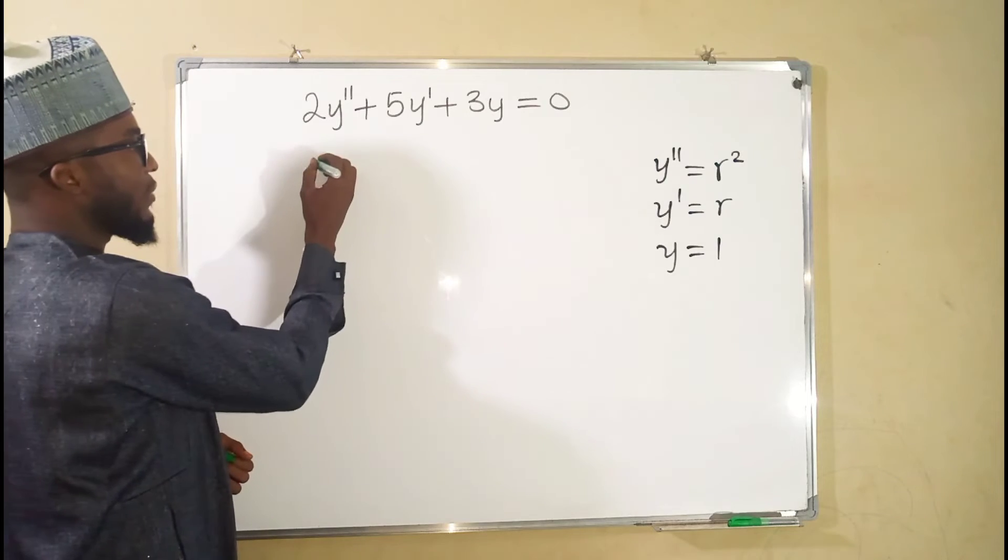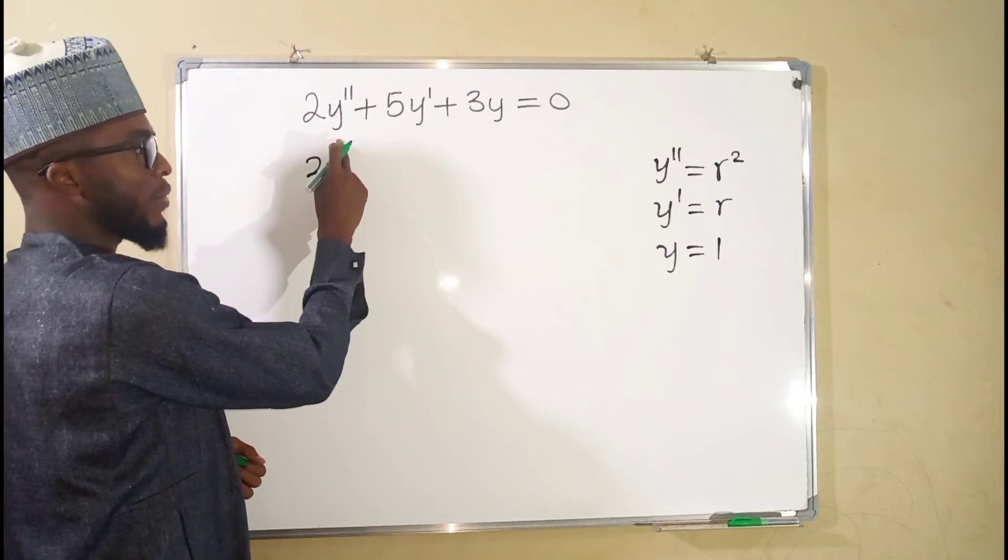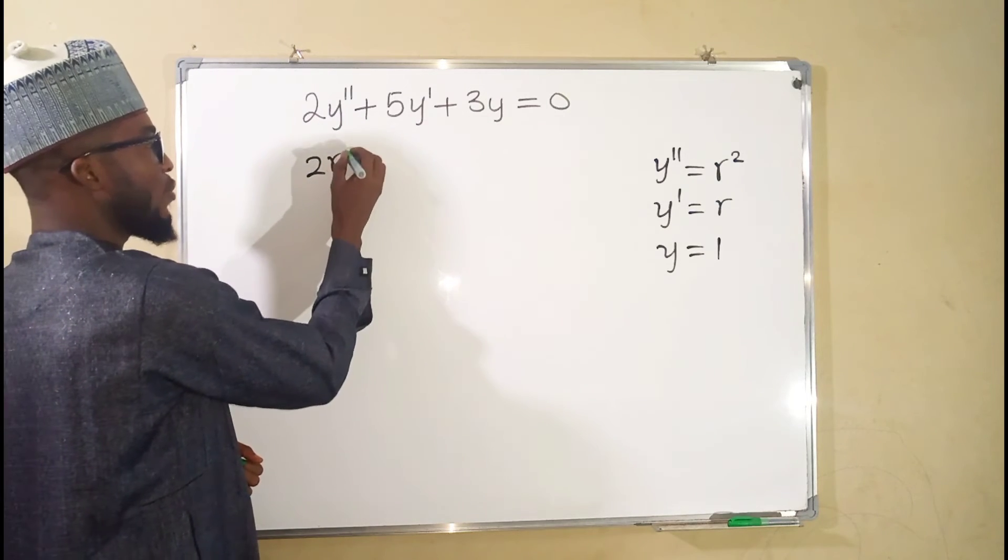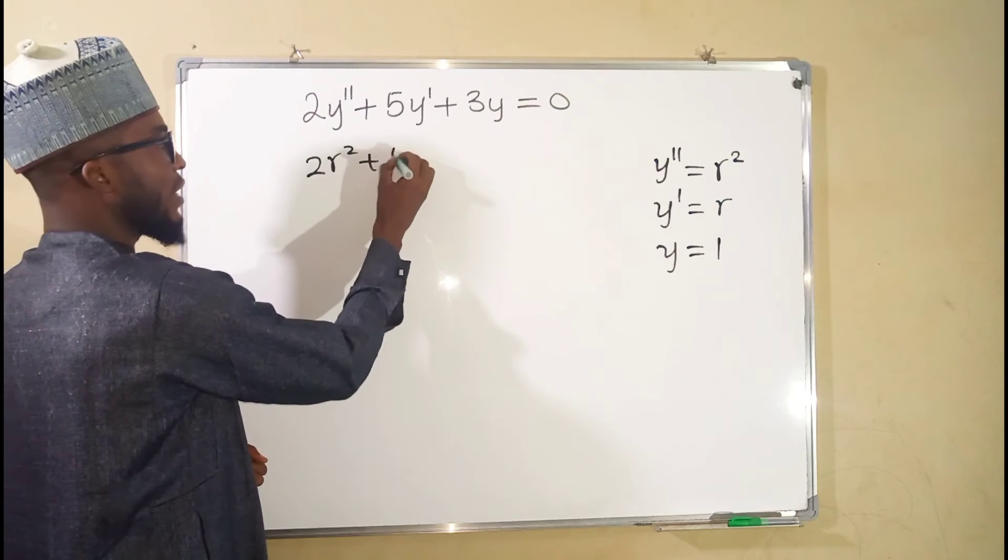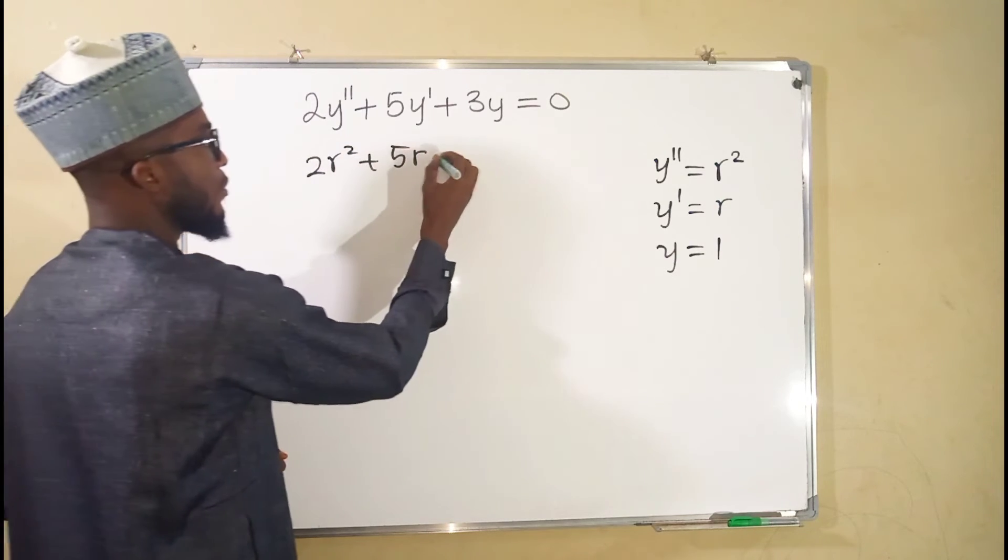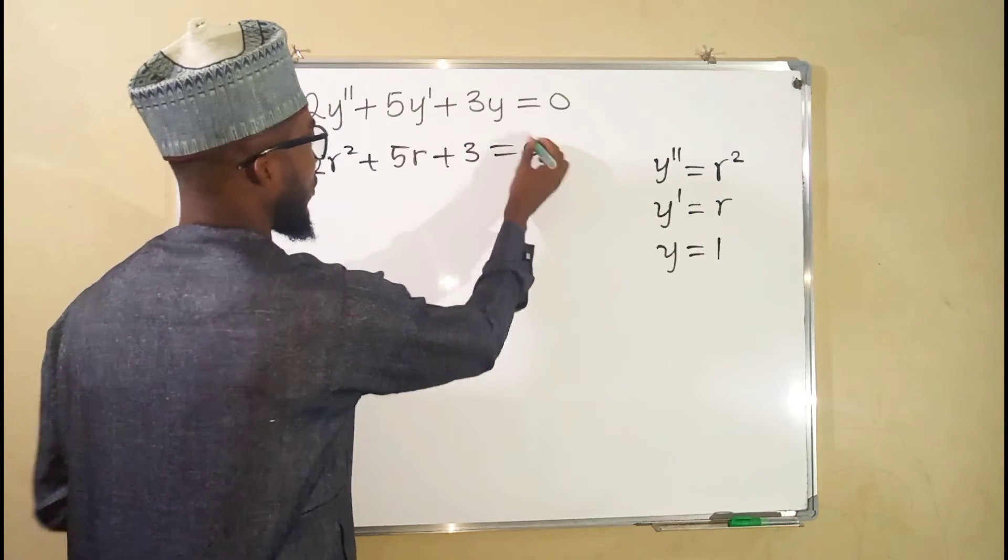So here we have 2 times y'', which is the same thing as r squared, 2r squared, plus 5r, plus 3 times 1 is still 3, equal to 0. This is our characteristic equation, or the auxiliary equation.